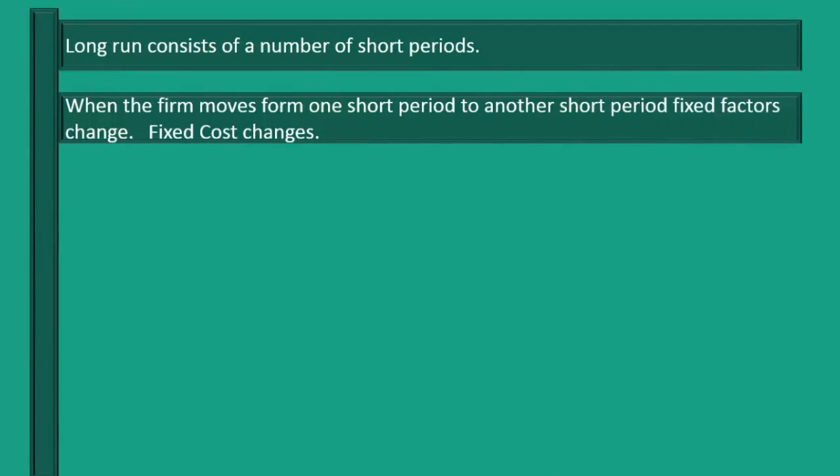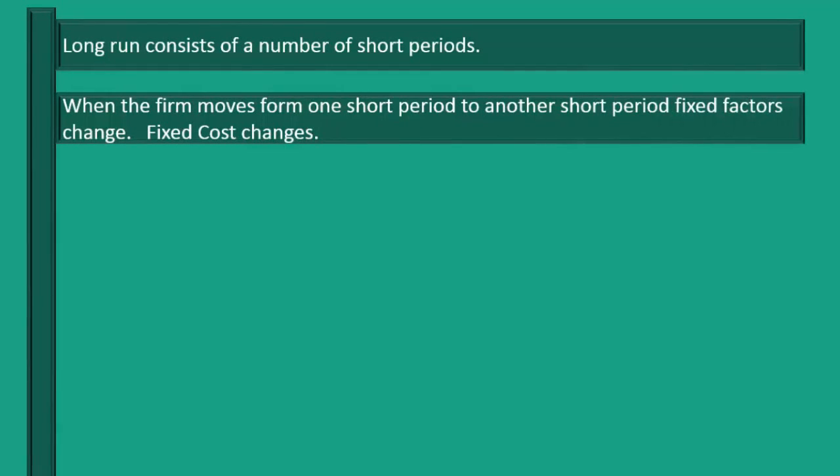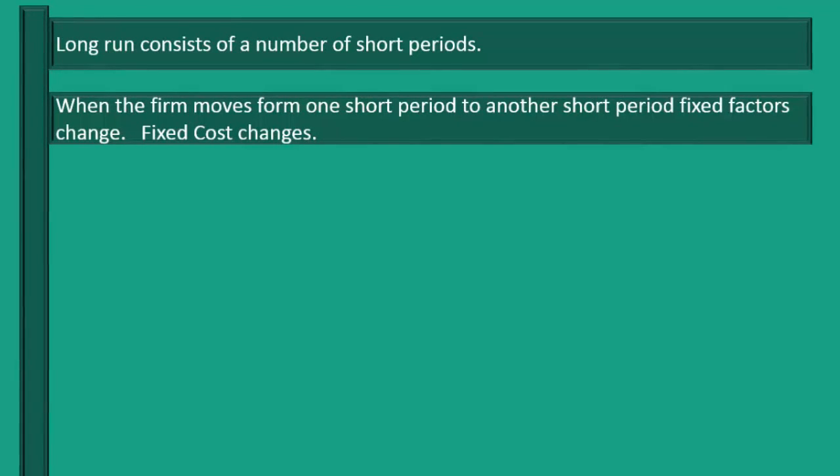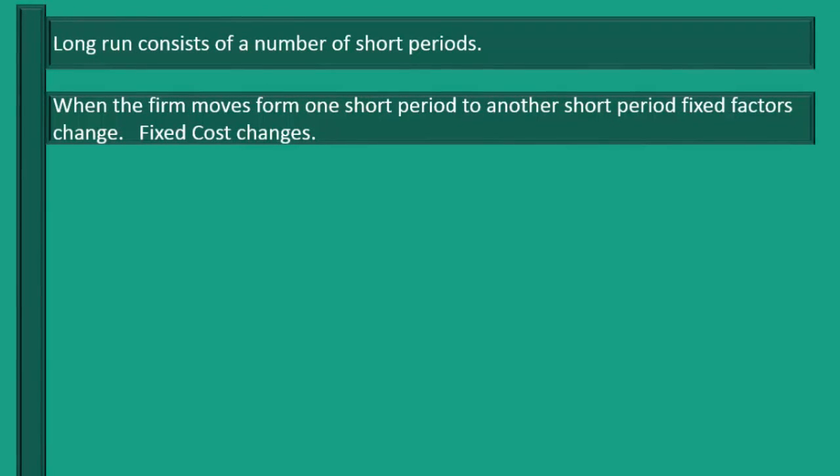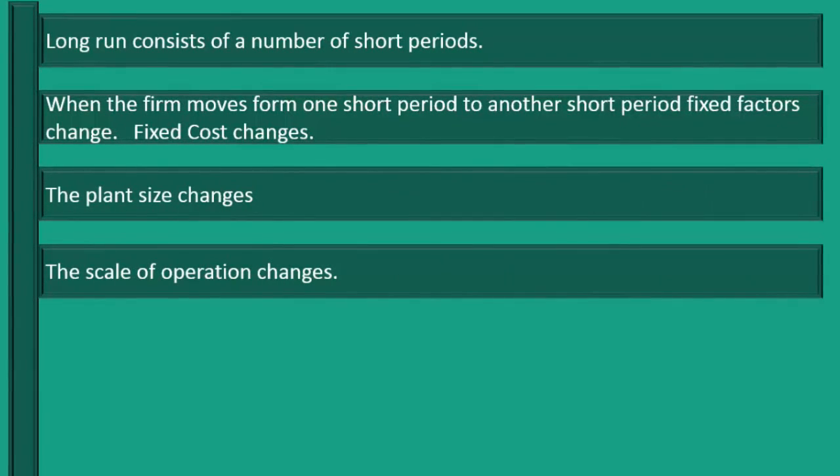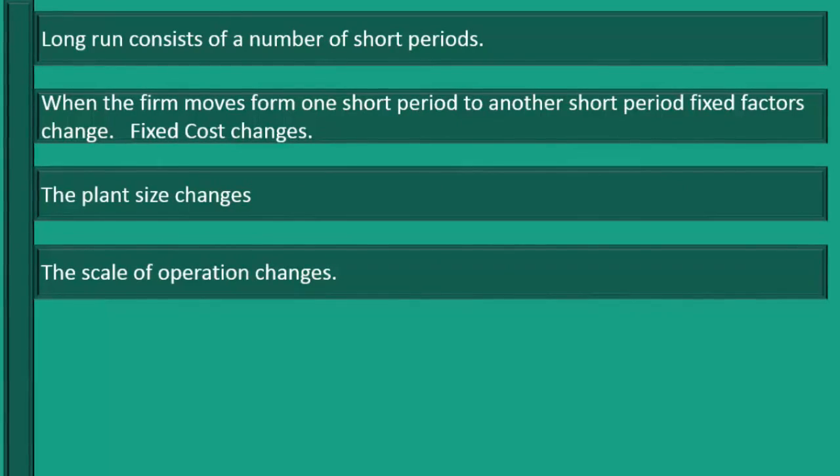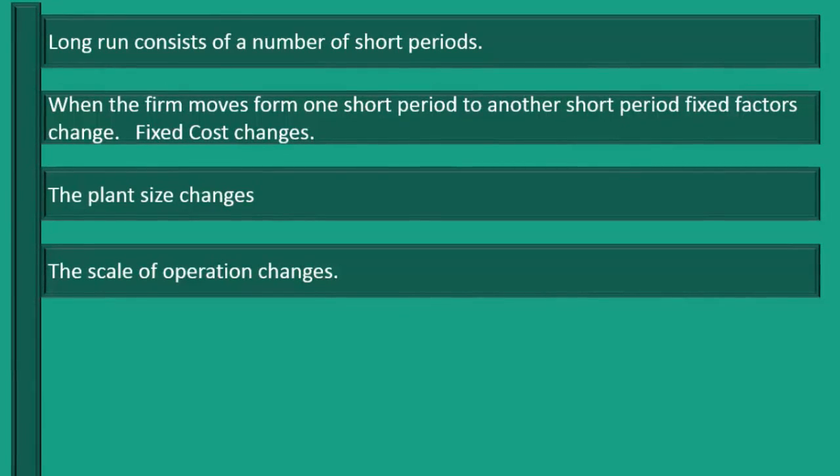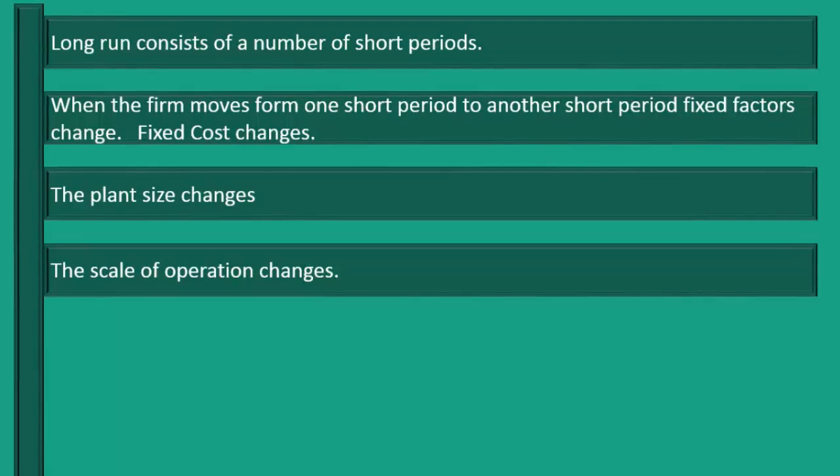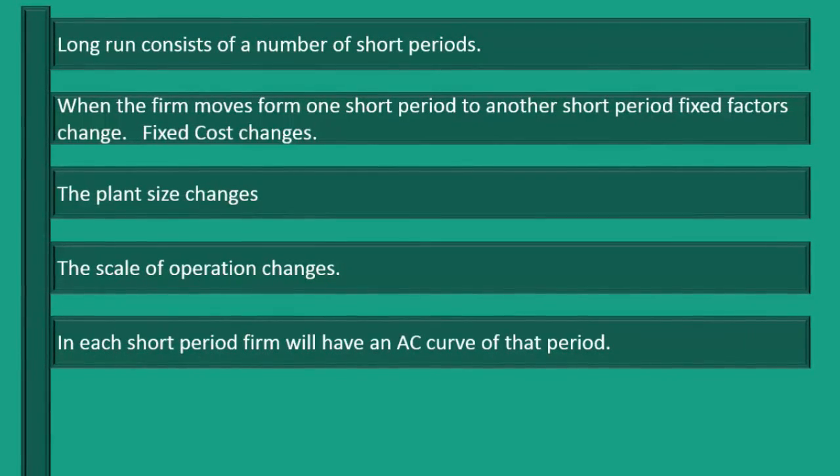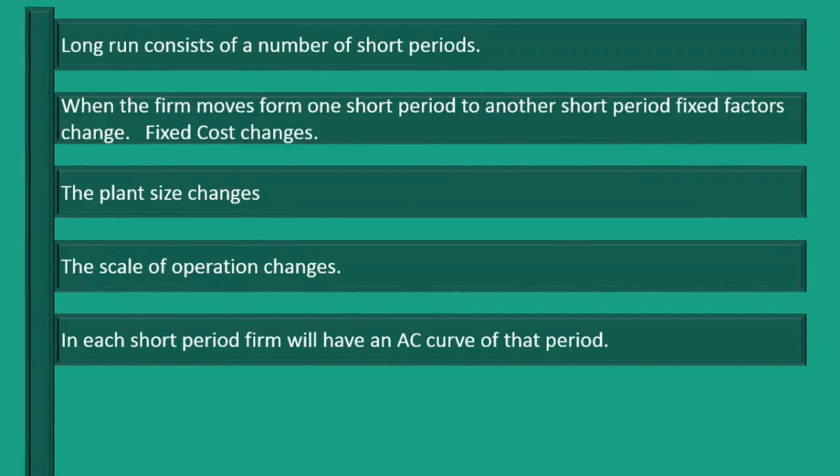When the firm moves from one short period to another short period, fixed factors change, fixed cost changes, the plant size changes, and the scale of operation changes. By scale of operation we mean a change in output due to a change in the plant size. In each short period, the firm will have an average cost curve of that period.